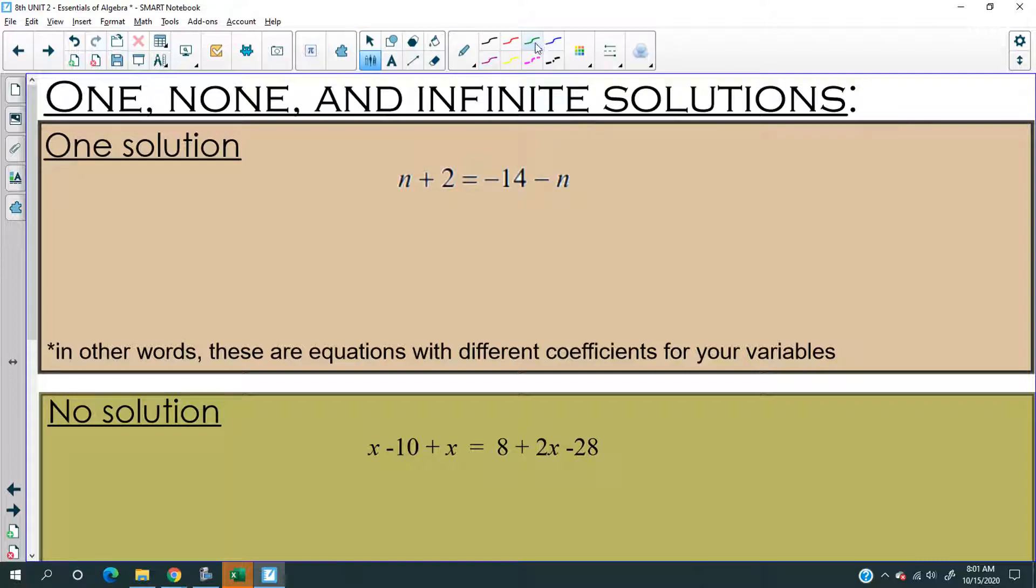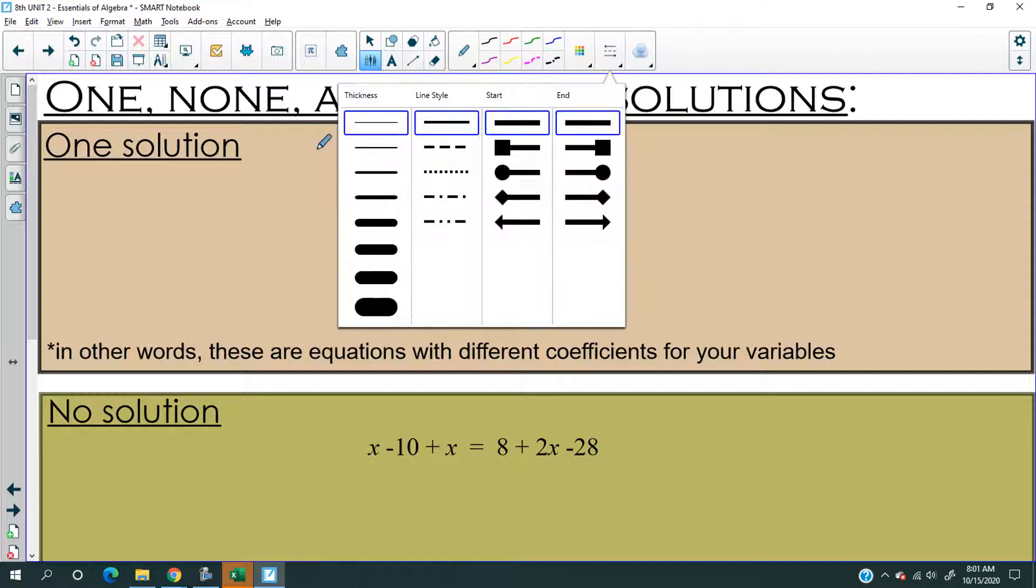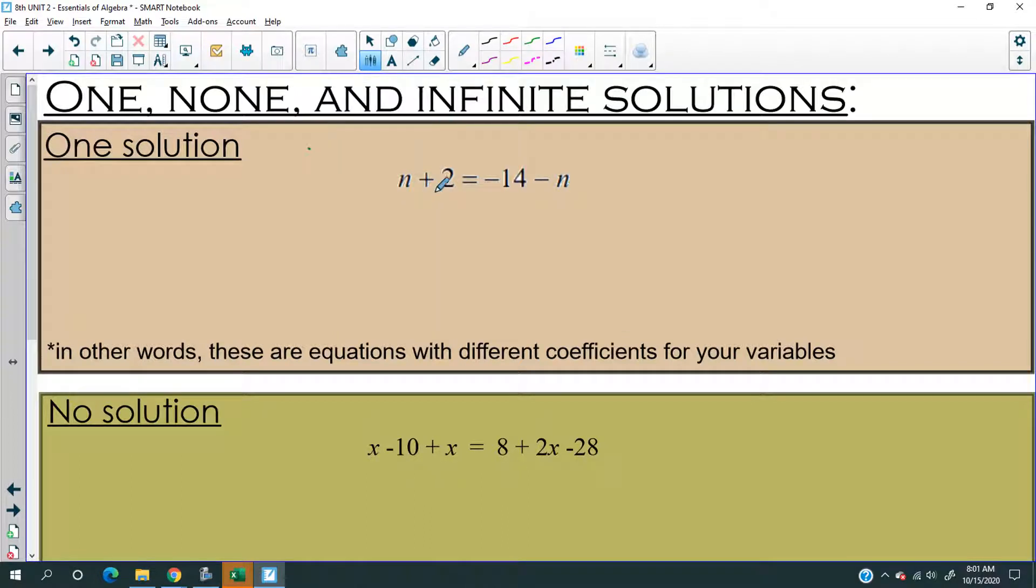Now, the first one is just a good old equation. Nothing crazy, really. Here we have an equation with variables on both sides, so we're going to use the Bully method. So n plus n is 2n plus 2, that equals negative 14, that cancels out.